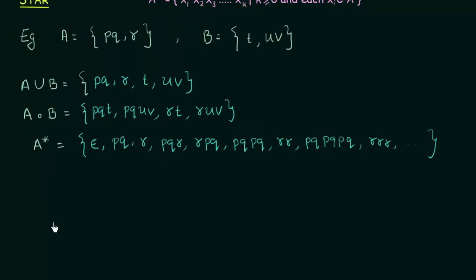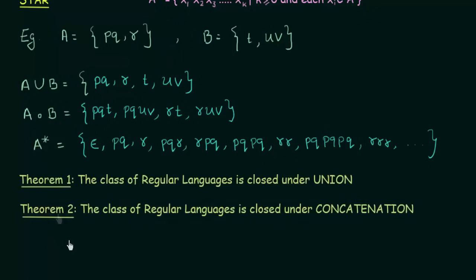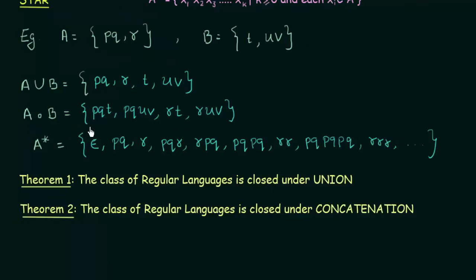There are two important theorems you need to remember. The first theorem says that the class of regular languages is closed under Union. This means that if A and B are two regular languages and you perform the Union of A and B, then the Union of A and B is also a regular language. The Union of two regular languages is always a regular language. That is the meaning of these two theorems.